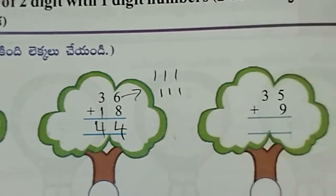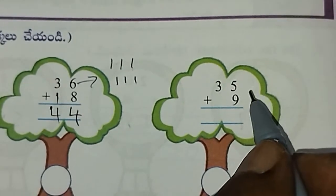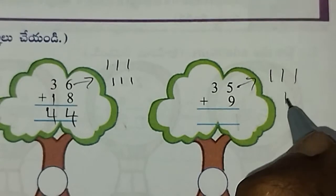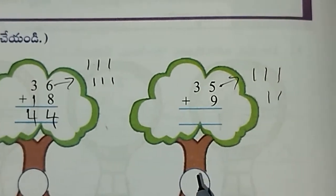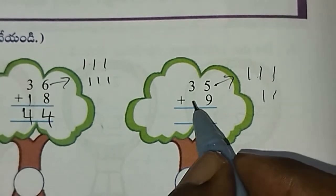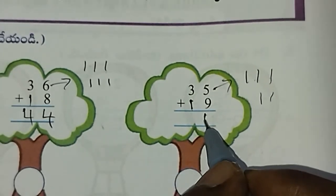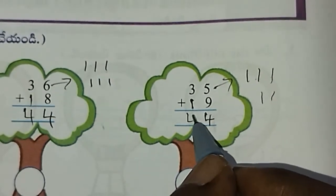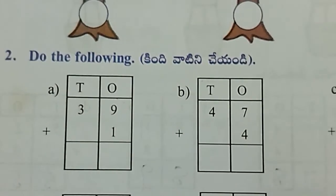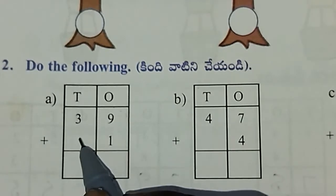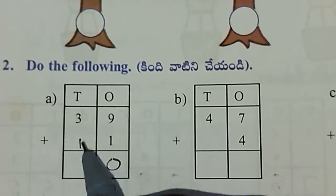Next, 9 plus 5. Draw 5 lines: 1, 2, 3, 4, 5. Then count from 9: after 9 is 10, 11, 12, 13, 14. So 9 plus 5 equals 14. Next, 3 plus 1 equals 4. Next, 9 plus 1 is 10, so 1 and 0. Then 3 plus 1 is 4.